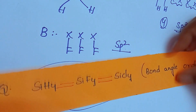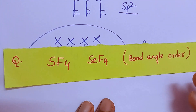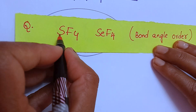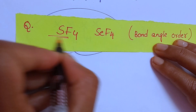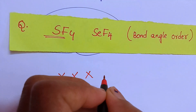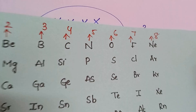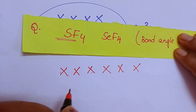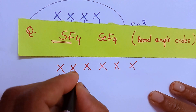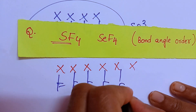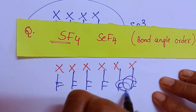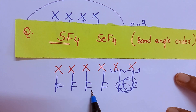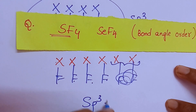Got it? Got the clarity? Please hit like if you like this point. Now, for SF4 and SeF4 — find hybridization. Oxygen, sulfur, selenium are in the same family. Sulfur has 6 valence electrons, each fluorine forms one bond, and the remaining 2 electrons form 1 lone pair. Total steric number is 5, giving SP3D hybridization with one lone pair.